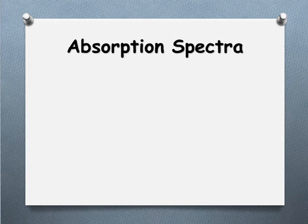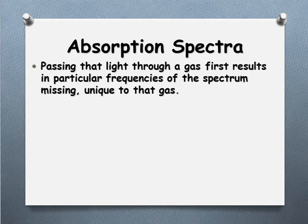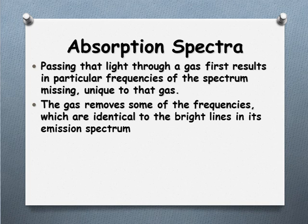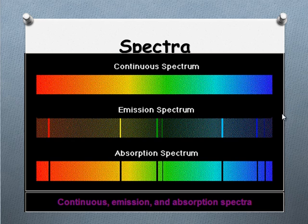Absorption spectra is in some ways the opposite of emission spectra. With emission spectra, we give the gas a lot of energy and it emits particular lines. With absorption spectra, we pass the whole white light rainbow — the full spectrum — through the gas. What we find is that particular frequencies are missing, because the gas removes those specific frequencies. These are identical to the ones it emitted when given energy. So the gas is absorbing energy from the white light at exactly those frequencies. So comparing: we have the continuous spectrum from white light, the emission spectrum, and then the absorption spectrum — where those corresponding lines are absorbed and go missing.